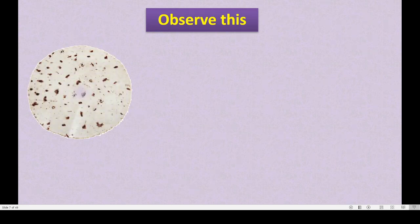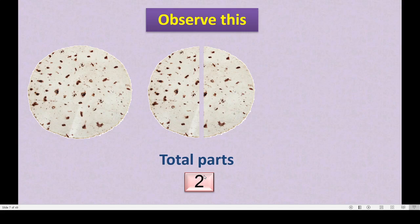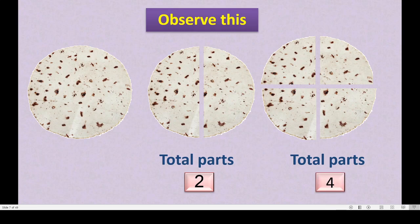Now, our roti again. We divided it between two children — total parts were two. The same roti we will divide into four equal parts among four children. One, two, three and four — total parts are four here. Here two parts, here four parts. Two equal parts is called half. Now we will learn the name for four equal parts.